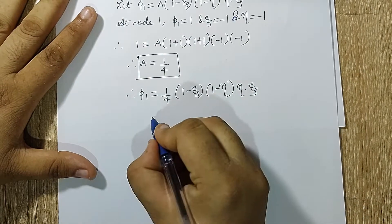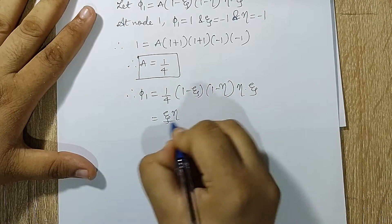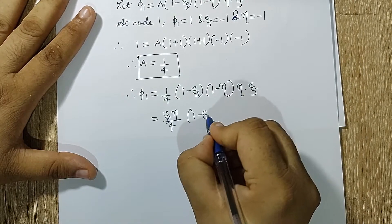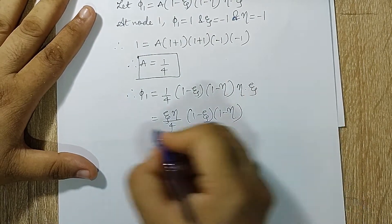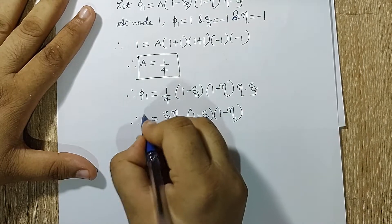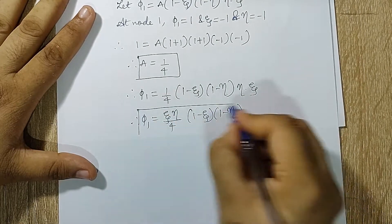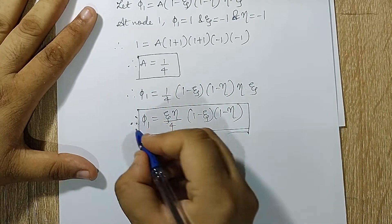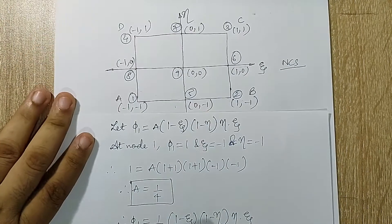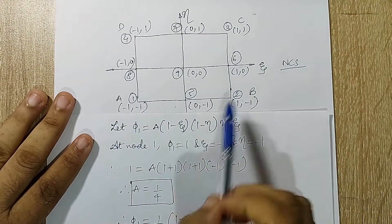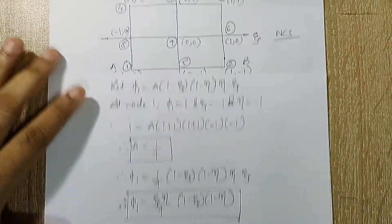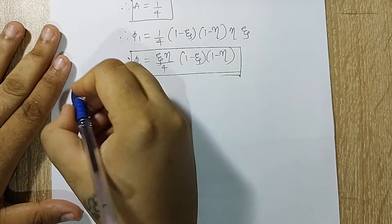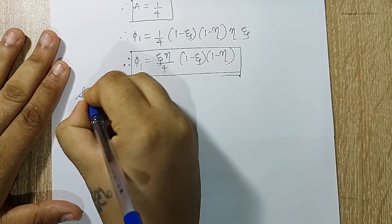Substituting, φ₁ equals (1/4)(1 − ζ)(1 − η), which can be written as ζη/4 times (1 − ζ)(1 − η). This is φ₁. If you want you can calculate φ₂, φ₃, φ₄ — they follow the same method of solving. Similarly, I'll show you a shortcut technique.